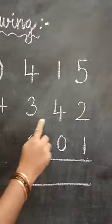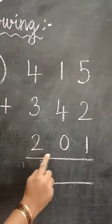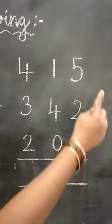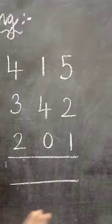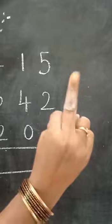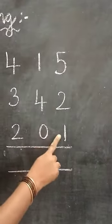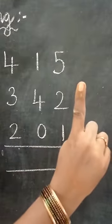450 plus 342 plus 201. We start adding from 1's place. 5 in the mind, 2 in the finger, after 5: 6, 7. 7 in the mind, 1 in the finger, after 7: 8.